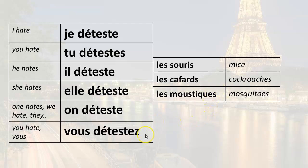You hate — vous détestez. You hate mice — vous détestez les souris. You hate cockroaches — vous détestez les cafards. You hate mosquitoes — vous détestez les moustiques.